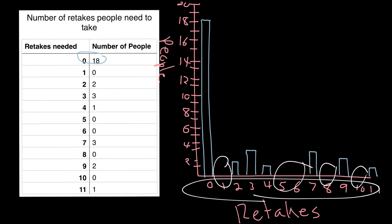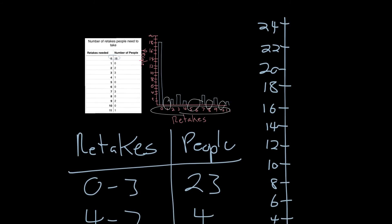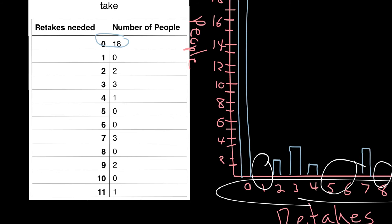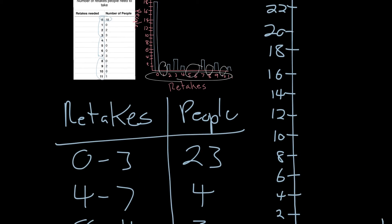A histogram would be a much better option. Since zero to eleven is actually twelve numbers, I can split that into four groups evenly. Remember, if you make a histogram, they need to be split into even groups. So I chose zero through three, four through seven, and eight through eleven — a little bit of retakes, a medium amount, and a lot of retakes. Then I just totaled up those amounts. In my category zero through three retakes, I have 23 people, four people in the next category, and three people in the last. So I made a new frequency chart to show that by group.